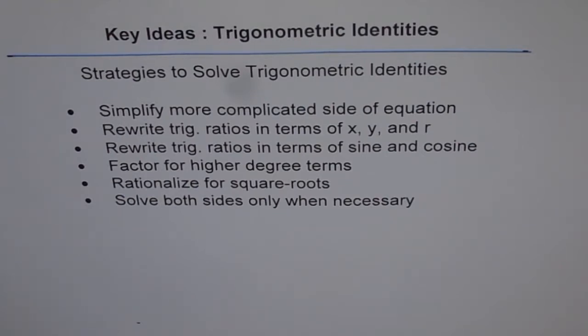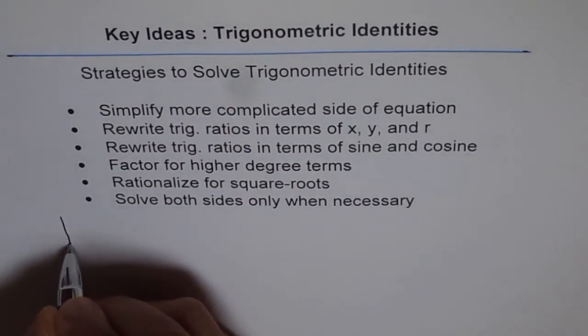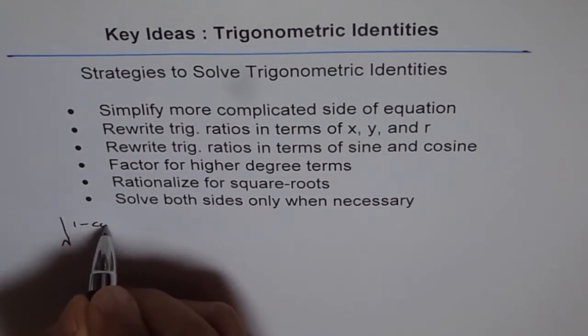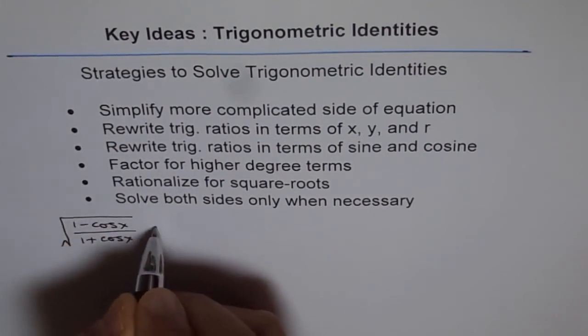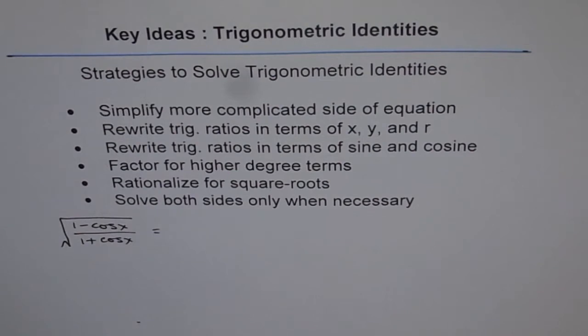Number one is simplify more complicated side of the equation. Trigonometric identity is an equation where you need to prove that left side is equal to the right side. Always the question is which side to start with. My suggestion is that look for the side which is more complicated and start with that side. Let me give you one example. Let's say you have an identity where you have to prove something like this: 1 minus cos x over 1 plus cos x within square root equals to something. In that case, this is a complicated side with square root.